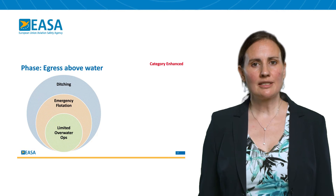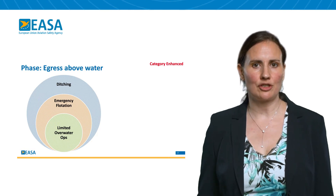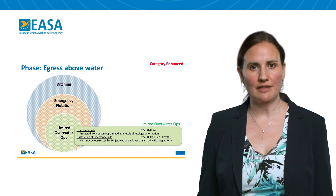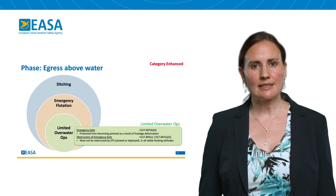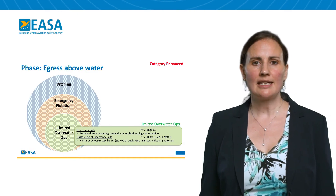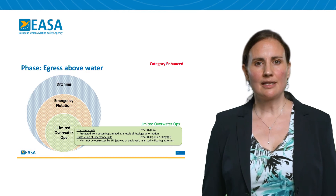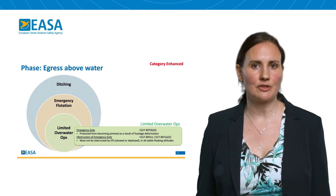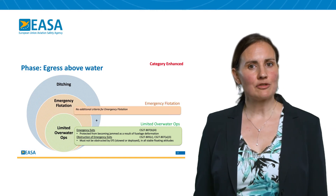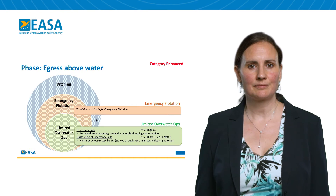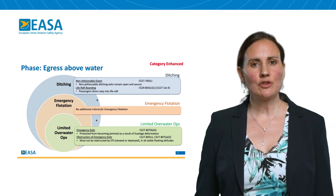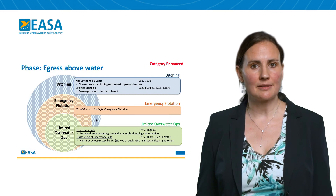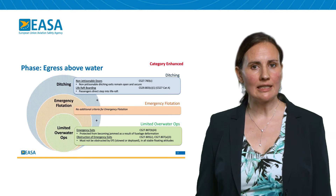Egress above water addresses the evacuation in the intended floating attitude. For limited overwater operations, the emergency exits must be protected from jamming as a result of fuselage deformation, and these exits must not be obstructed by the emergency flotation system in either the stowed or deployed configuration. This no-obstruction demonstration is also necessary in all stable floating attitudes. There are no additional criteria for emergency flotation. For ditching, any non-jettisonable ditching emergency exit must remain open and secure up to the selected sea state, and passengers must be able to directly board the life raft.